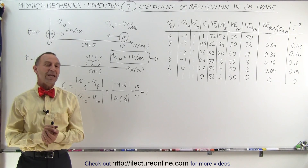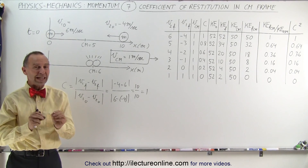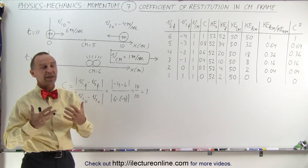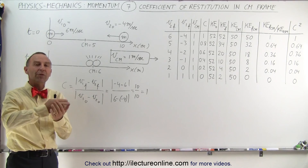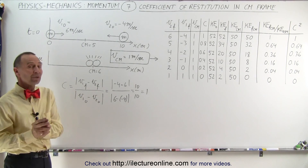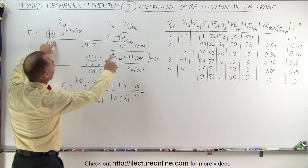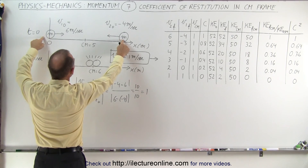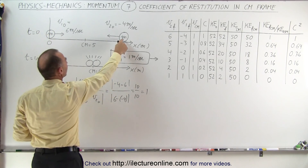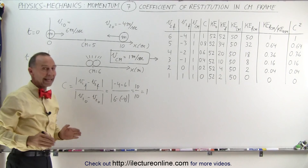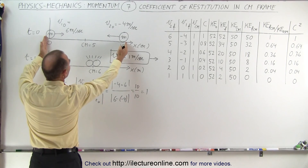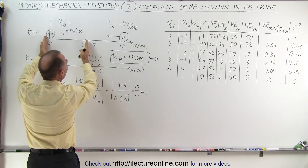Welcome to ElectronLine. Here we have a really good example to understand the coefficient of restitution, and also the concept of the center of mass moving at a constant speed through any collision. We make things a little bit simpler in this example: two masses that are exactly the same, m and m. The one on the left is moving to the right at 6 m/s, the one on the right is moving to the left at 4 m/s. At t=0, they are 10 meters apart, which means the center of mass is at 5 meters.